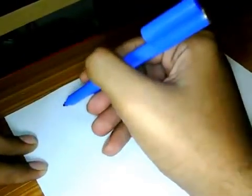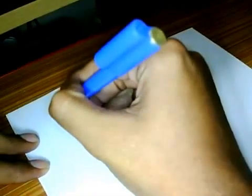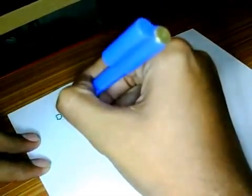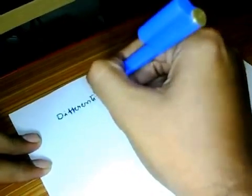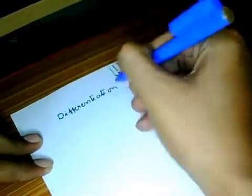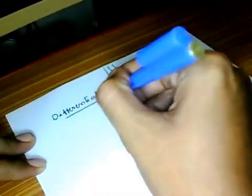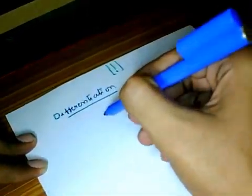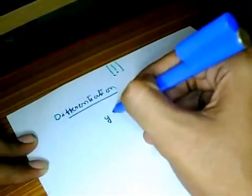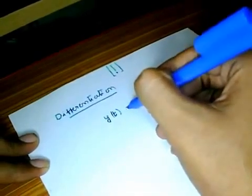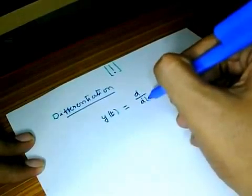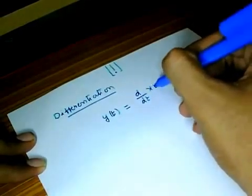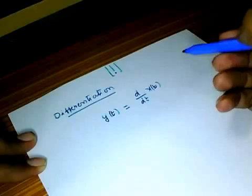Now in this lecture, let us see the concept of differentiation. For example, if I have a signal called y of t and a signal called x of t, then the derivative of that signal is defined by y of t equal to d by dt of x of t.